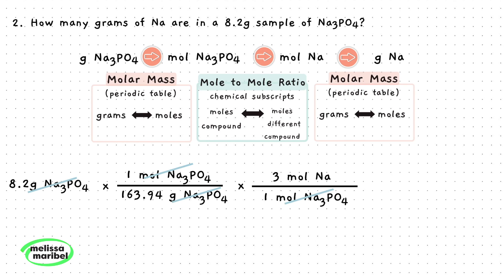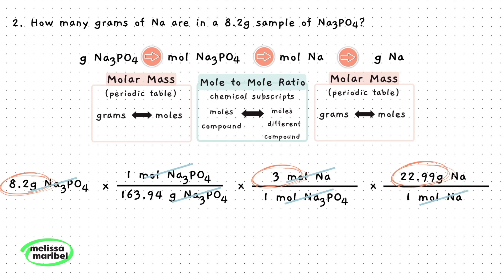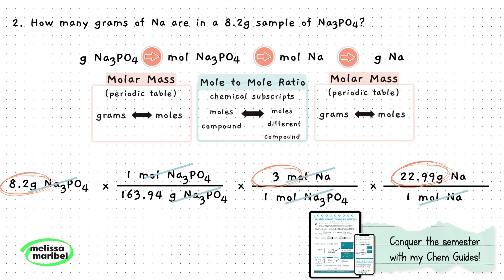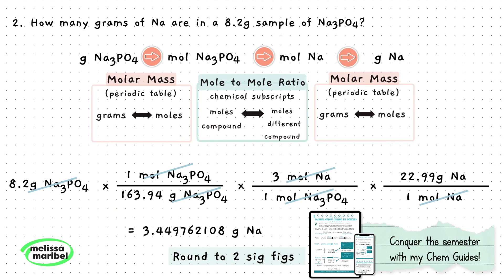Next, we will use the molar mass of sodium, which is 22.99 grams per mole, to get our grams of sodium. We will place 1 mole of sodium on the bottom so the moles of sodium cancel out, and place the grams of sodium on top. We can stop here because we have our desired unit of grams of sodium, which is what this question was asking for. Multiply all numbers in the numerator together, then divide by the denominator to get the result. Round to the least number of sig figs, which is 2, so our answer is the final value.